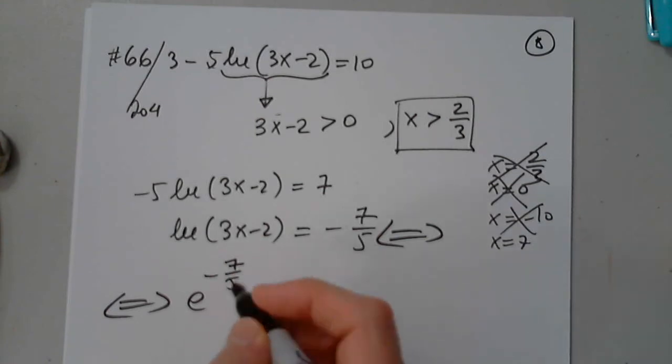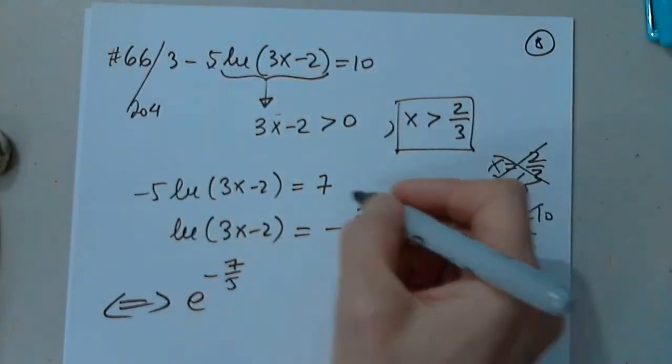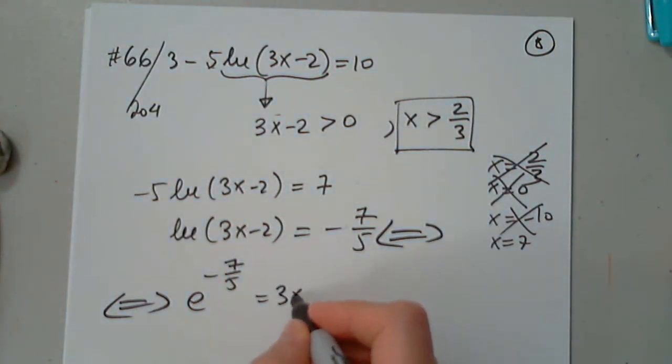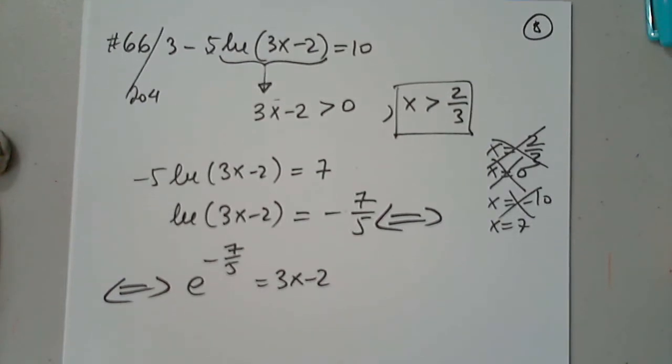Exactly. E to this power equals this. Awesome. So now we change this into, because this is a number. Who cares? This is a poor number.